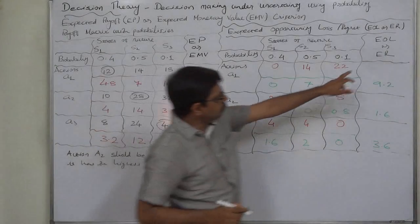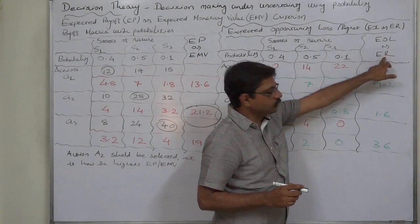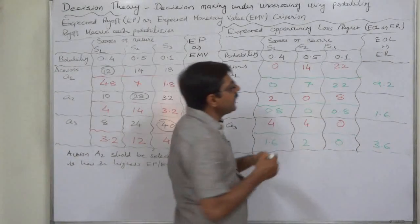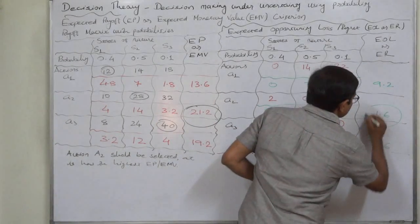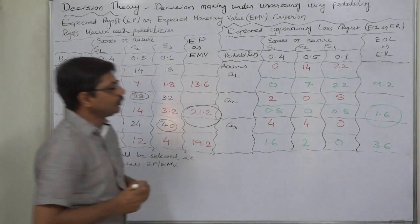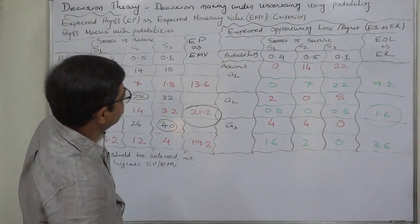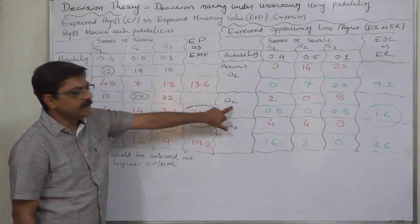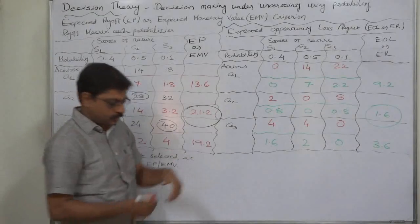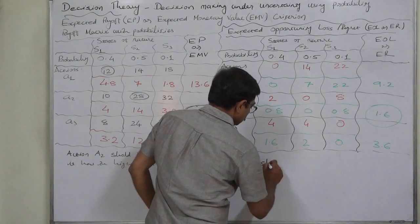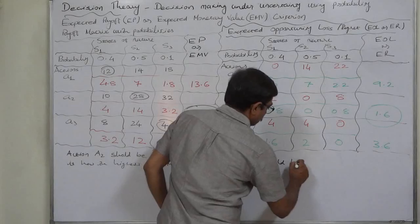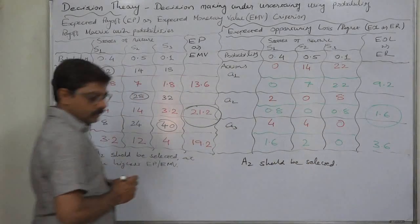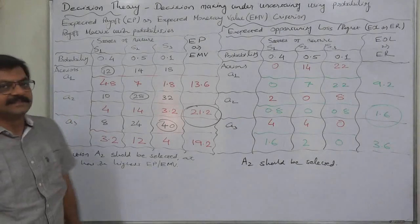And in case of opportunity loss or expected opportunity loss or expected regret, the action or act or strategy having the lowest EOL should be selected. So in this case, the decision maker should select alternative or action a2. A2 should be selected. That's it, thank you very much.